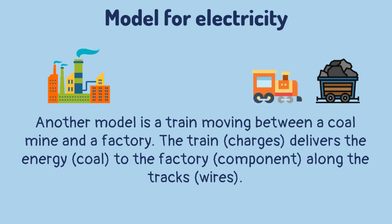Another model is a train moving between a coal mine and a factory. The train, which represents the charges, delivers the energy — which represents the coal — to the factory, which represents the component, along the tracks, which represent the wires.